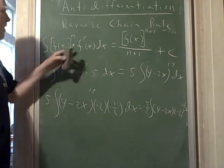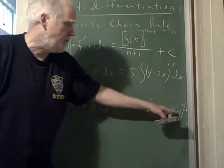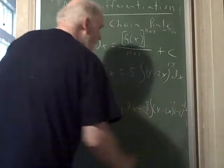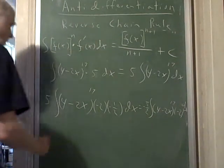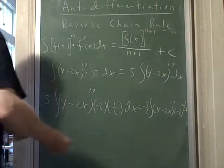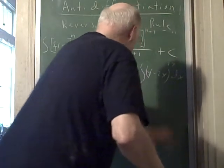Now I've got a function times function prime plus this outside coefficient, which is going to be multiplied. And of course, this is to the 17th power. So I simply go directly—let me see if I've got enough room here. I can write this down here, it'll look better.